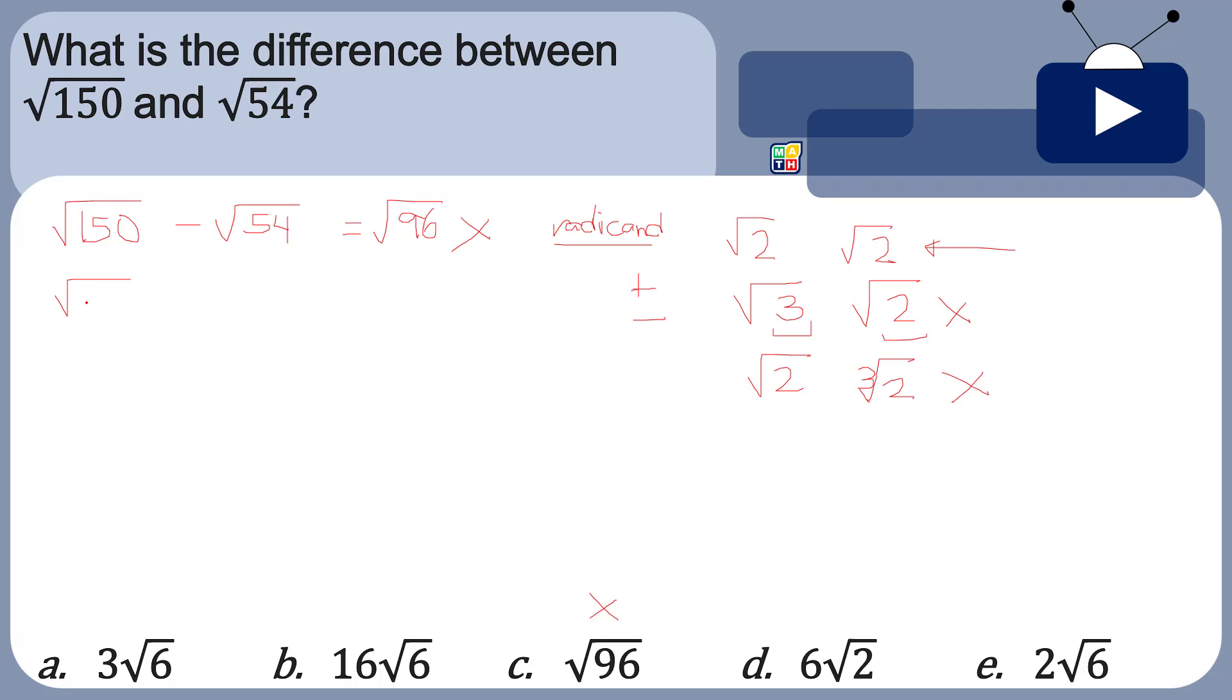I'm talking about for 150, it can be 25 times 6, right? Because 25 times 6 is 150 and one of the numbers is a perfect square. Now you can also try 4 but I don't think this is divisible by 4. You can try to use other factors but here it's enough for us to use 25.